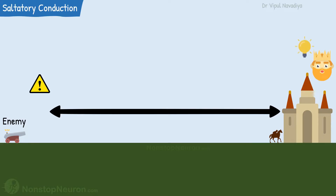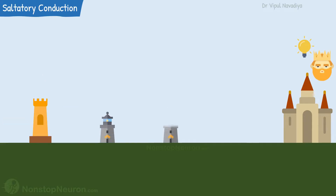So the king takes a smarter approach. He builds lighthouses between the border and the palace. These lighthouses are close enough to see the light of the next lighthouse, and far enough to keep the number of lighthouses minimum.